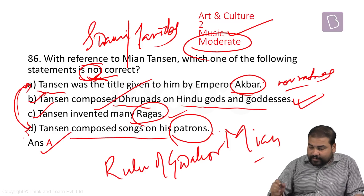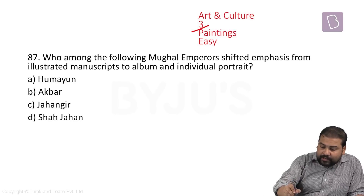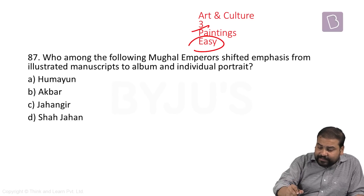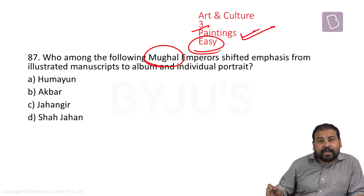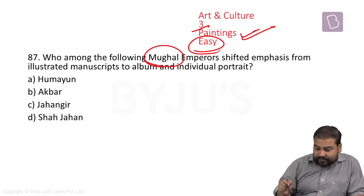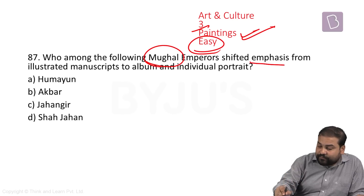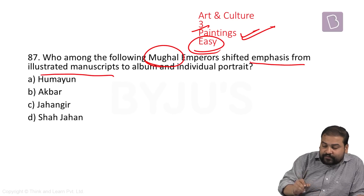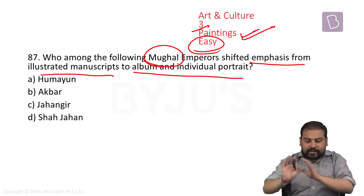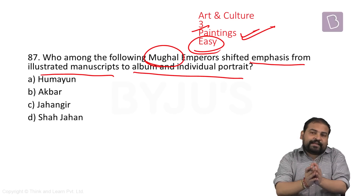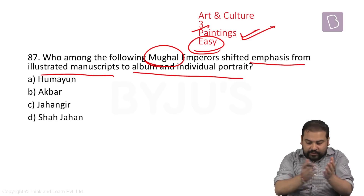Moving ahead — that was the second question of art and culture, moderate. Third question is easy and comes from paintings — Mughal paintings. The question asks which Mughal emperor shifted the emphasis from illustrated manuscripts to album and individual portraits. We always say that different Mughal rulers had their own tastes, starting from Babur, Humayun, Akbar, Jahangir, Shah Jahan and Aurangzeb.